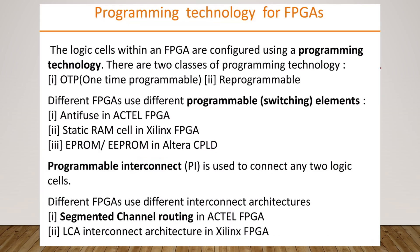The first topic in Unit 3 is programming technologies for FPGAs — that is, how the FPGA is reconfigurable using different programming technologies. The basic elements present in the FPGA are: first, programmable logic cells; second, programmable interconnect; and third, IO block. The programmable logic cells within an FPGA are configured using different programming technologies. These are: first, antifuse, used in Actel FPGA; second, static RAM, used in Xilinx FPGA; and third, EEPROM as well as EPROM used in Altera CPLDs — complex programmable logic devices.